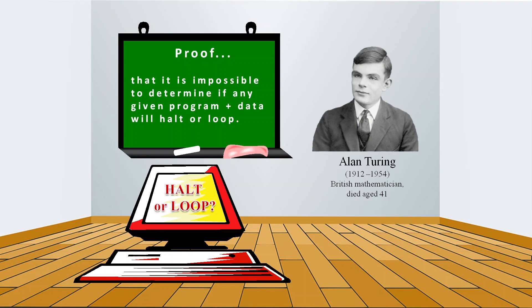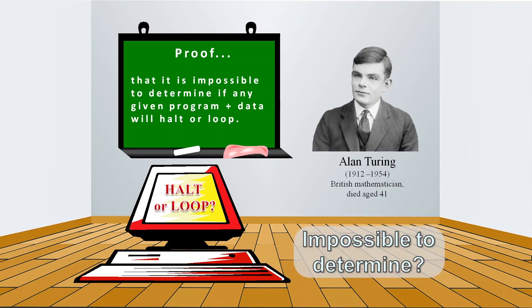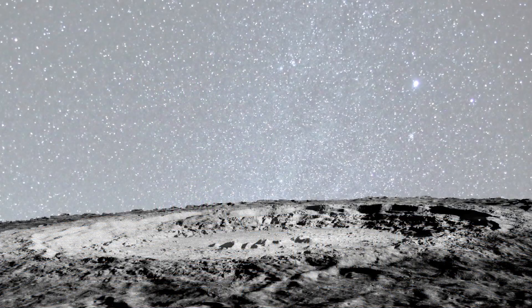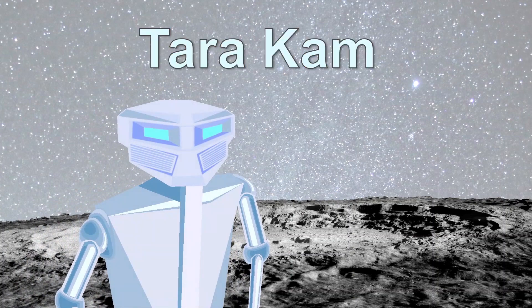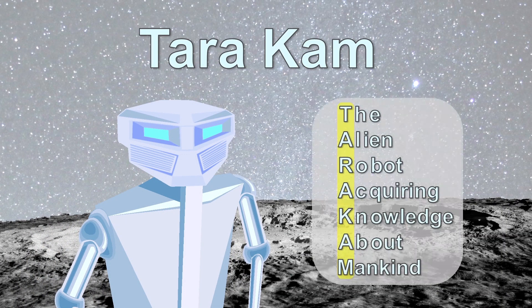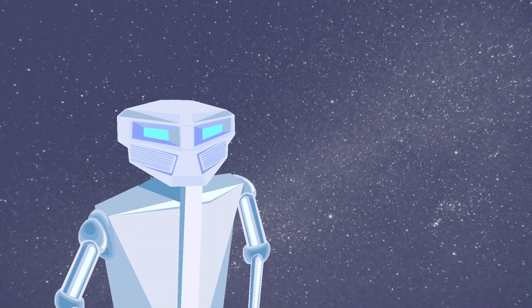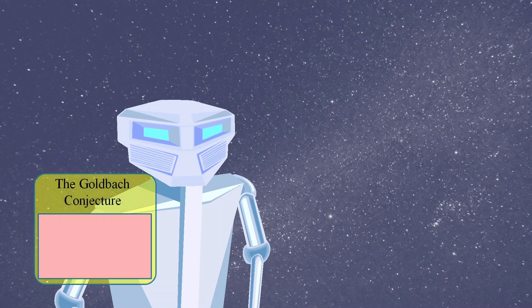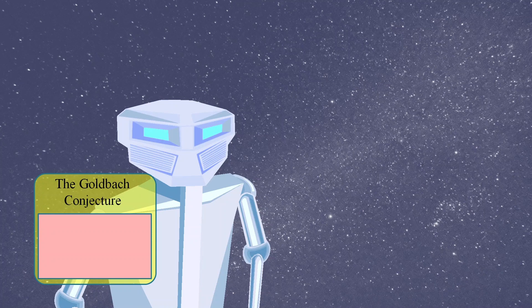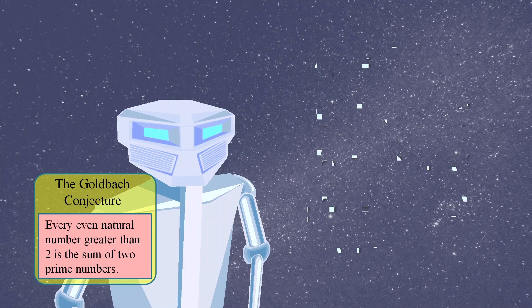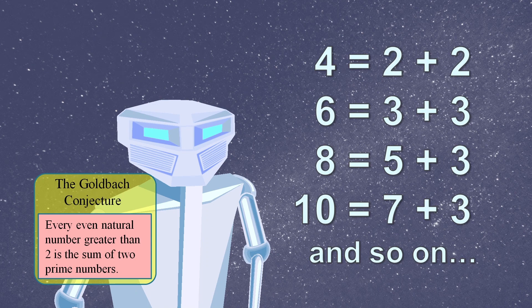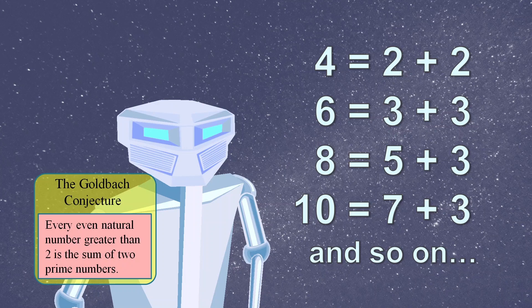Turing devised a proof to show that it was impossible to determine if a program would finish nicely or go into a loop. Someone who strongly contests the logic of the halting problem proof is Tara, an alien robot who has been acquiring knowledge about mankind. She agrees that if we could determine if a program loops or halts then we could solve other unsolved problems such as the Goldbach conjecture.